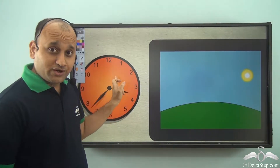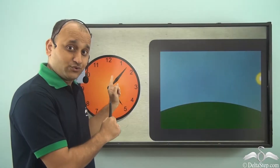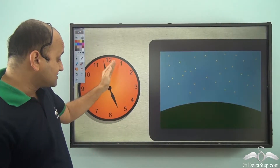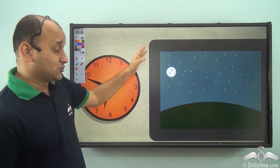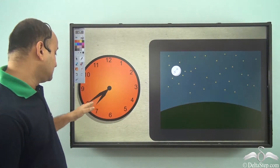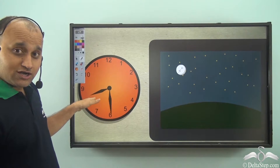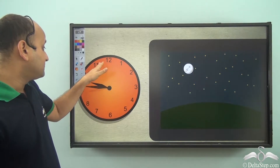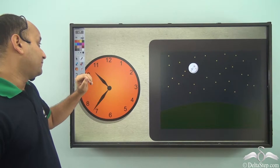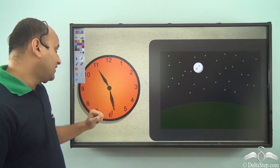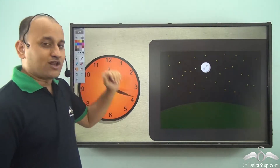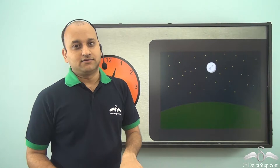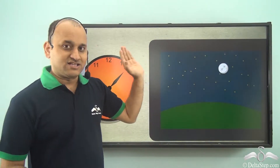The day moves on. You have crossed the afternoon — the first circle was during the afternoon. Now the clock is continuously moving and slowly it's evening again. It's 8 o'clock in the evening, then 9, 10, 11, and finally it's 12 o'clock again. That's the second circle — and it's midnight.